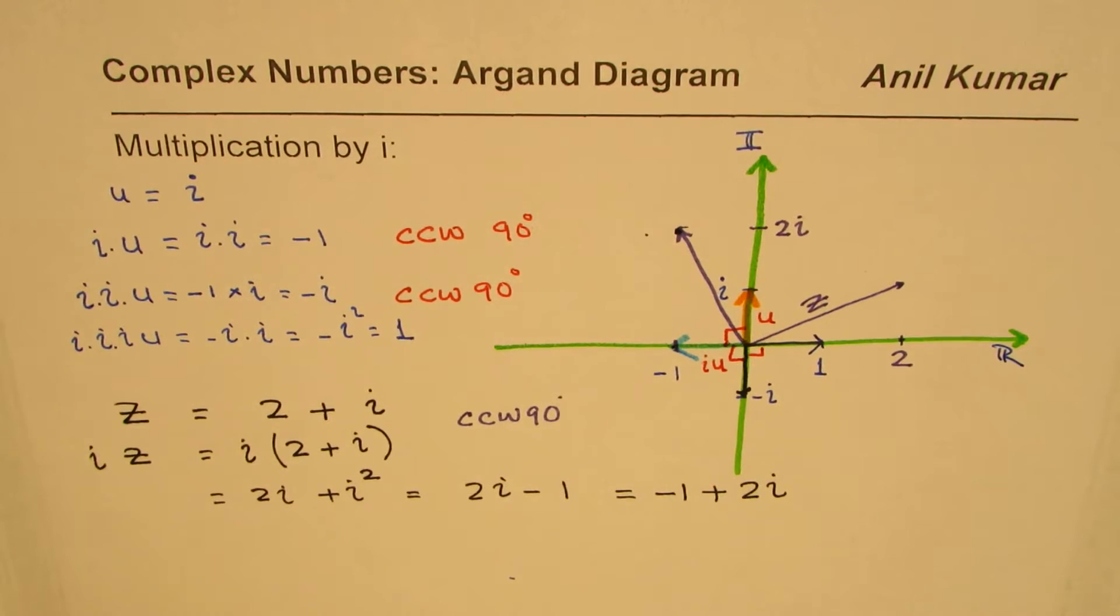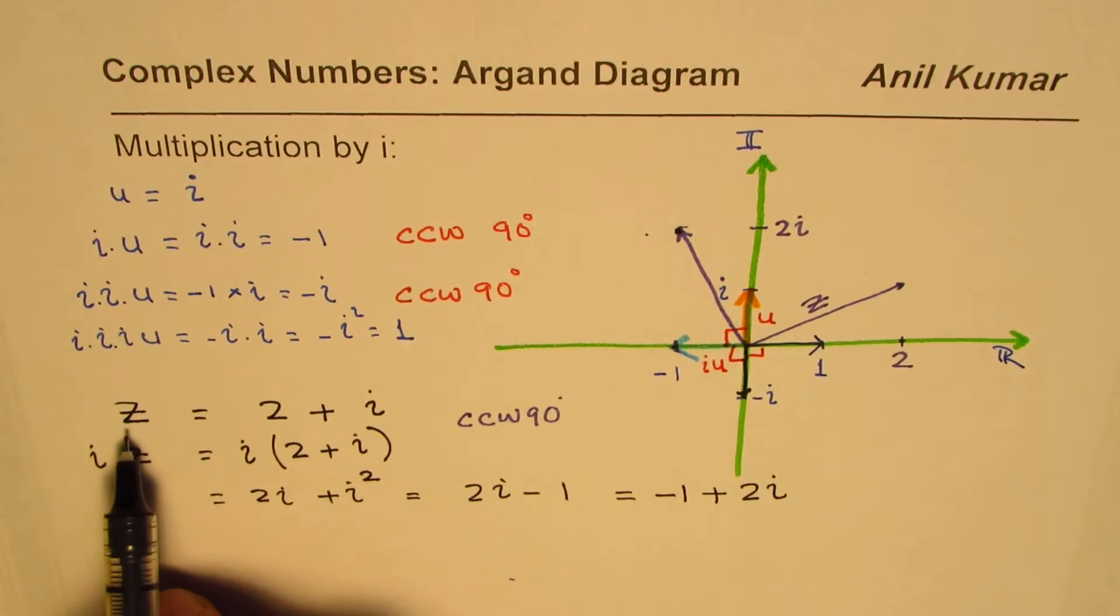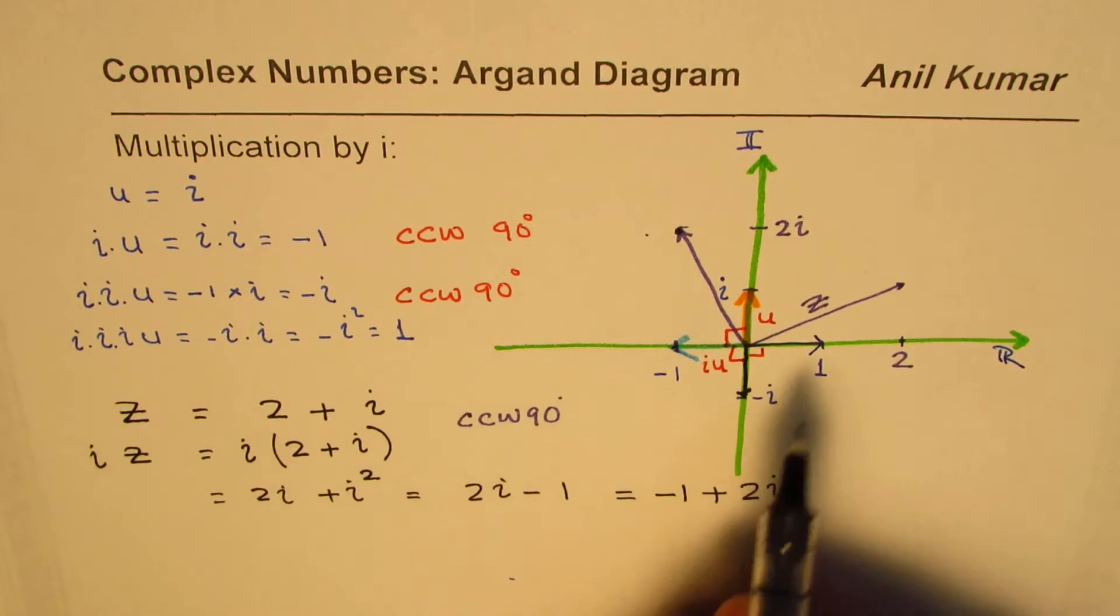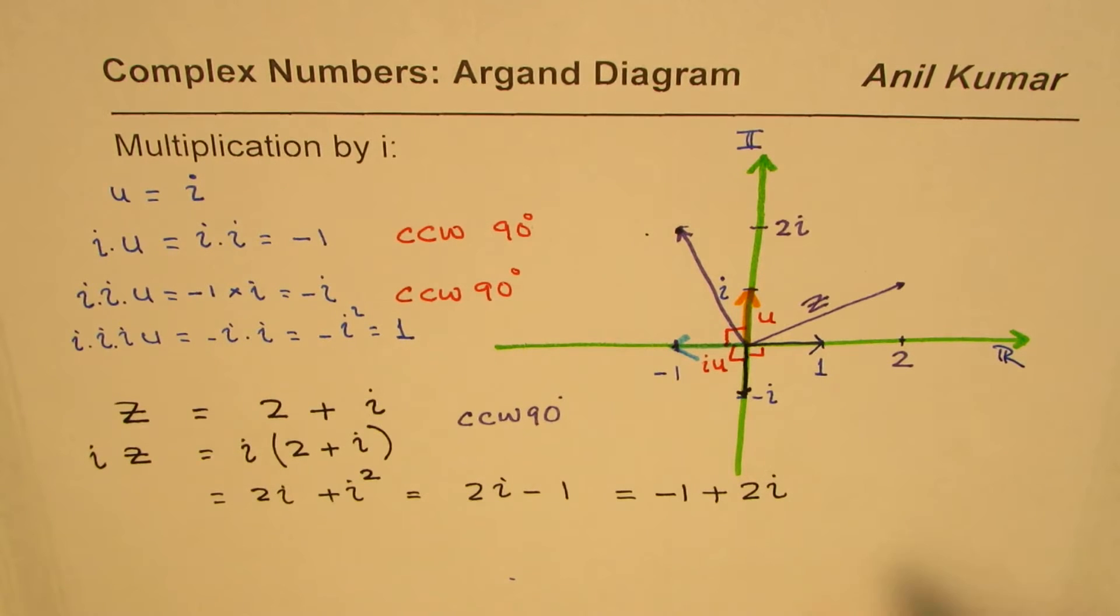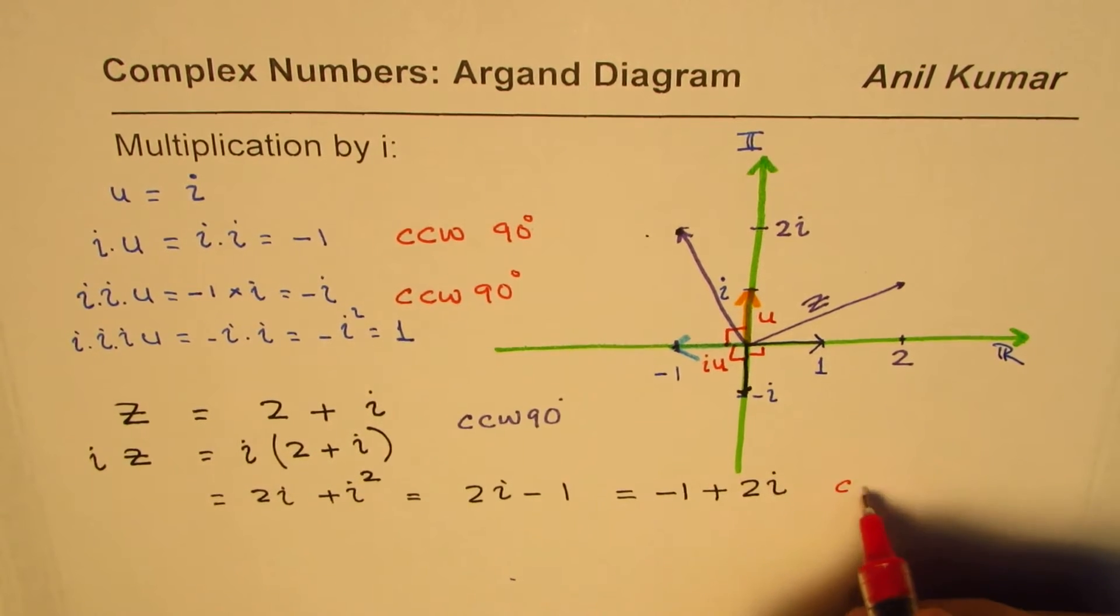So as you can see in this diagram, whenever you multiply by i, any complex number z, this is what happens. What happens is, it rotates counterclockwise by 90 degrees.